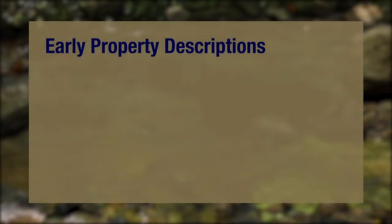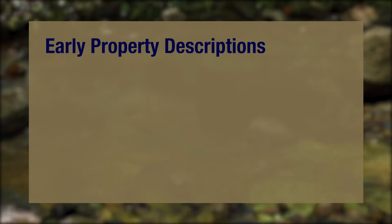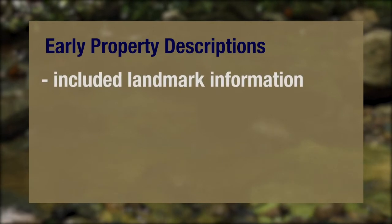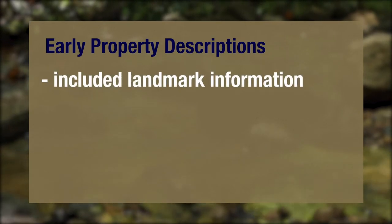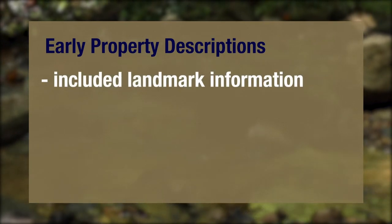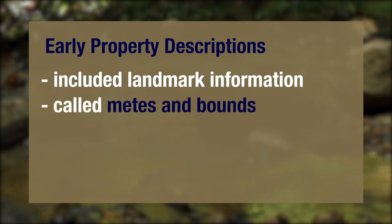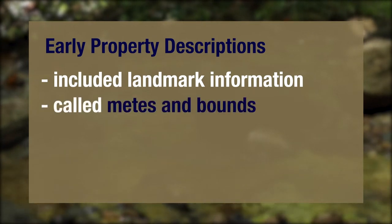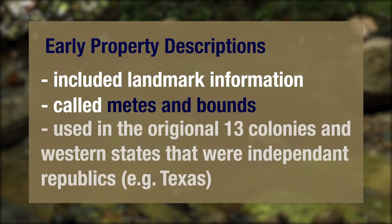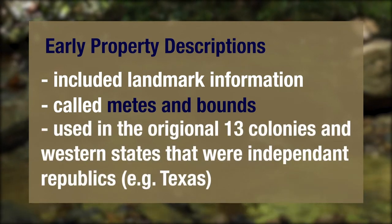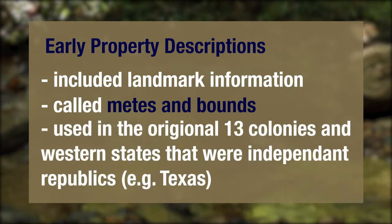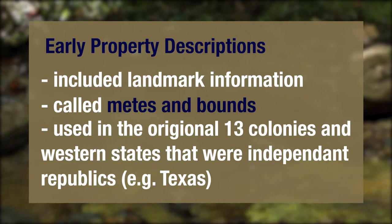Early property descriptions recorded in the United States were often imprecise and included information about surrounding natural and built features. This system of describing land location is called metes and bounds, which is common for property located in a state that was one of the original 13 colonies or in western states that were independent republics like Texas.